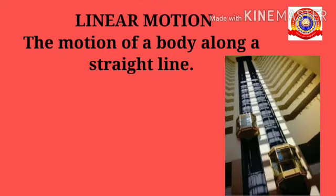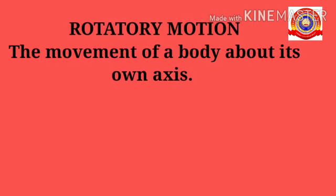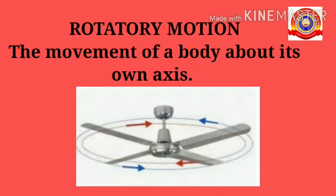The next one is linear motion — the motion of a body along a straight line is linear motion. For example, a lift going up and down. The next one is rotatory motion — the movement of a body about its own axis is rotatory motion. Rotation of a fan is given as an example.